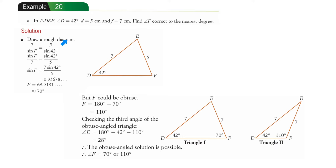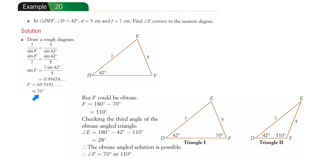We're going to use the sine rule. With the unknown angle on top: sine of F over 7 equals sine of 42 over 5. Put that in the calculator using sine to the minus 1, make sure your calculator is in degrees, and you get 69.5181 degrees — approximately 70 degrees to the nearest degree. But F could be obtuse, so it could also be 180 minus 70, which is 110.